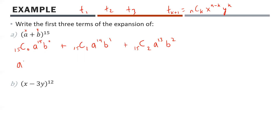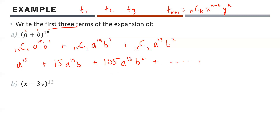Anything C0 is always equal to 1, so the first term is just a^15. 15C1 is actually 15, so the second term is 15a^14·b. 15C2 requires a calculator — it's 105 — so the third term is 105a^13·b². You're probably glad you didn't have to multiply all that out by hand. Those are just the first three of what would be 16 terms total, since it's always n plus 1.